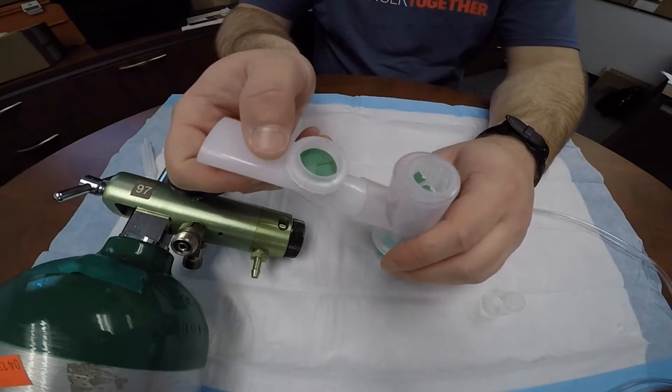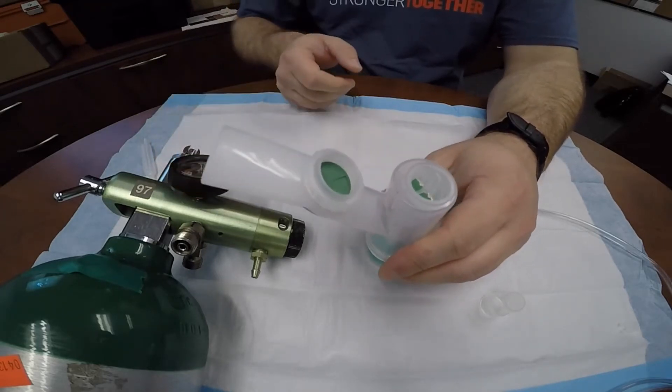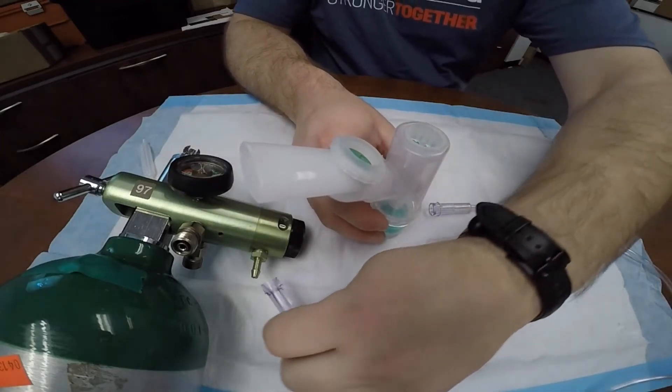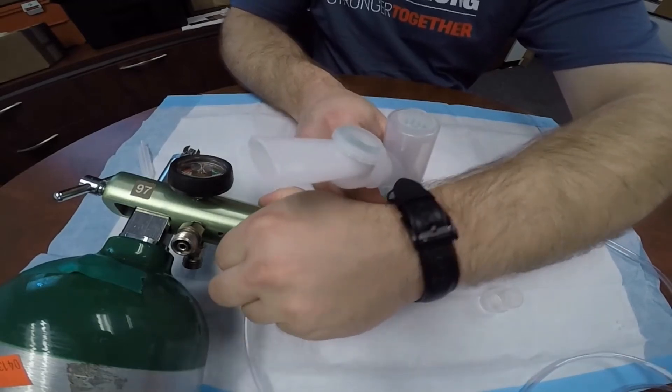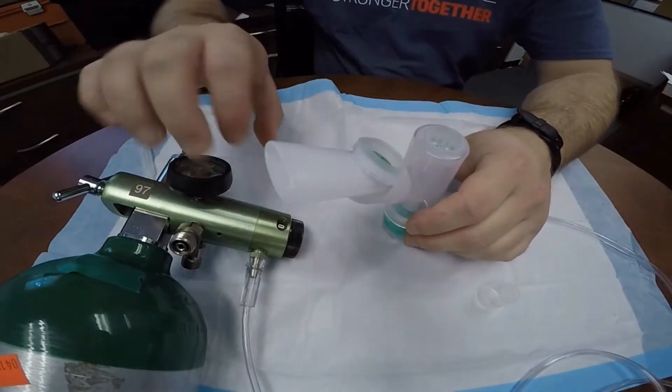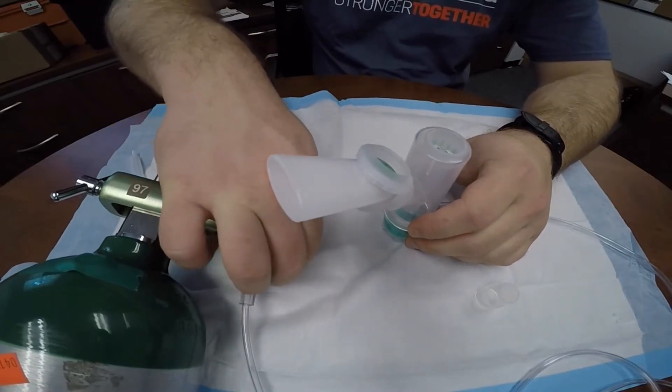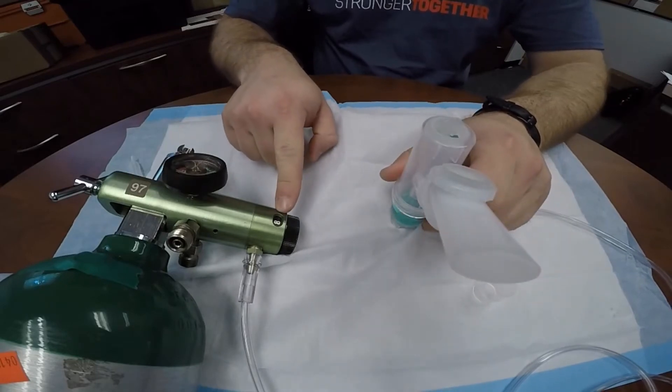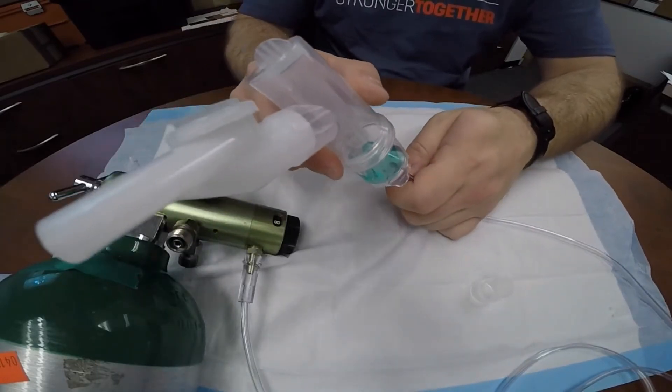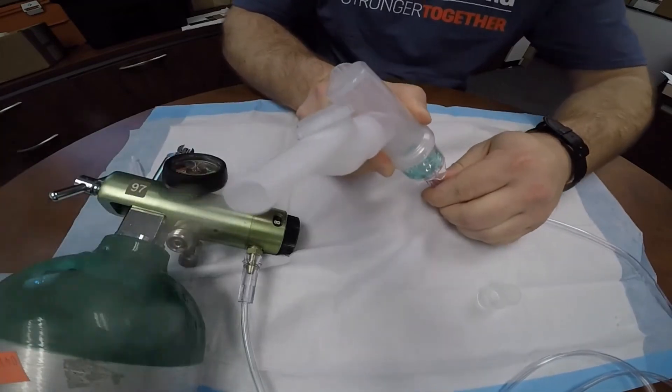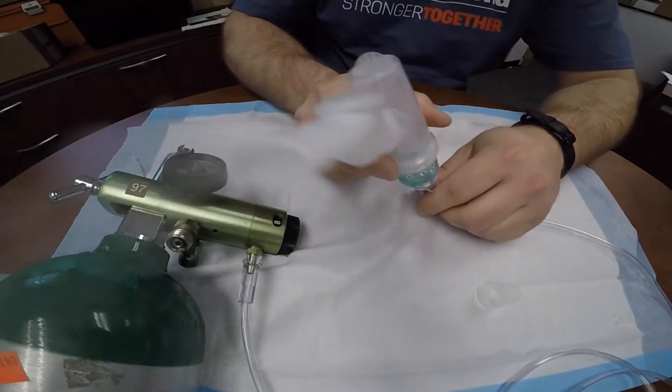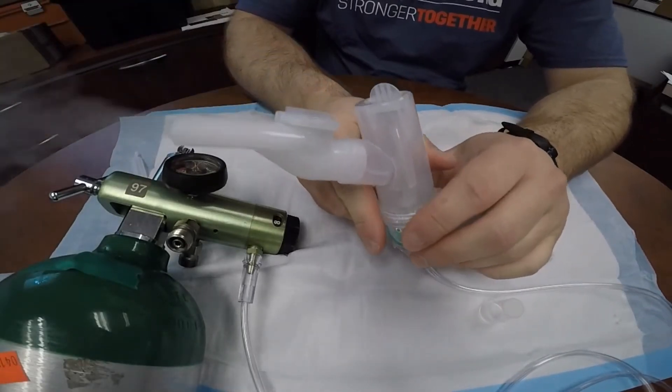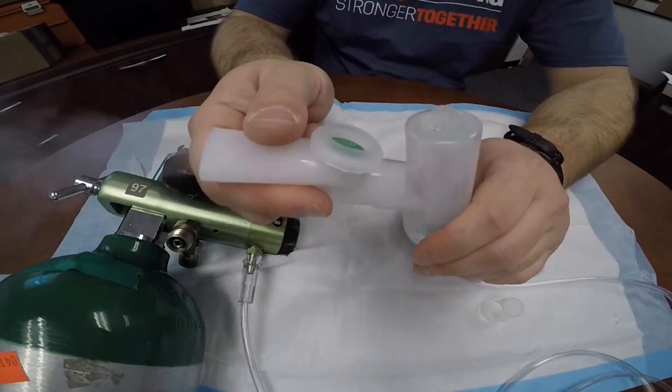Screw the nebulizing chamber assembly back onto it. And for handheld administration, you'll connect the mouthpiece to the mouthpiece port on the side of the device. Connect one end of the supply tubing to oxygen. The manufacturer recommends an 8 liter per minute flow rate. That's 8 liter per minute flow rate. The other end of the supply tubing goes to the oxygen port at the bottom of the nebulizing chamber, and so we have nebulization happening.